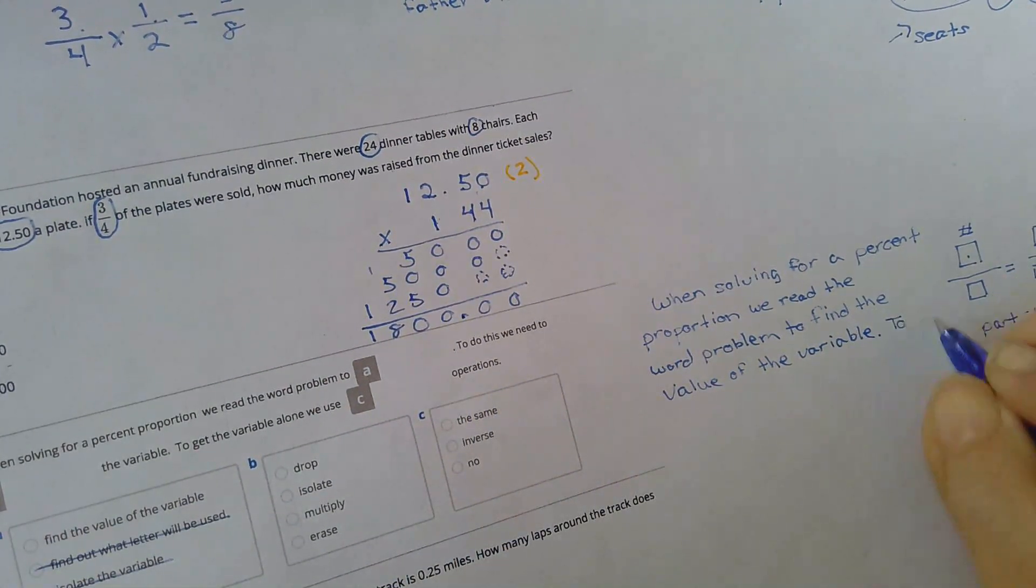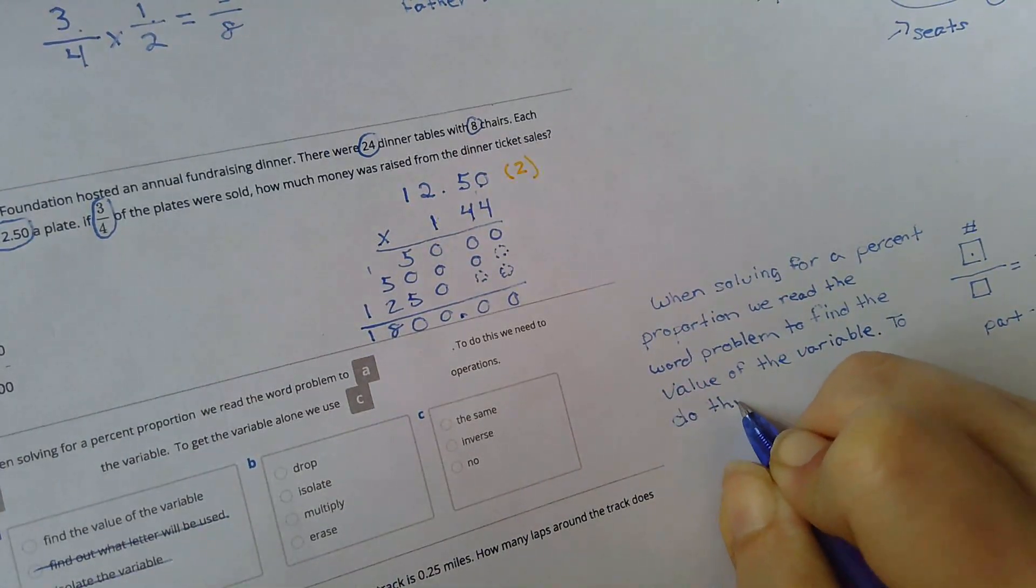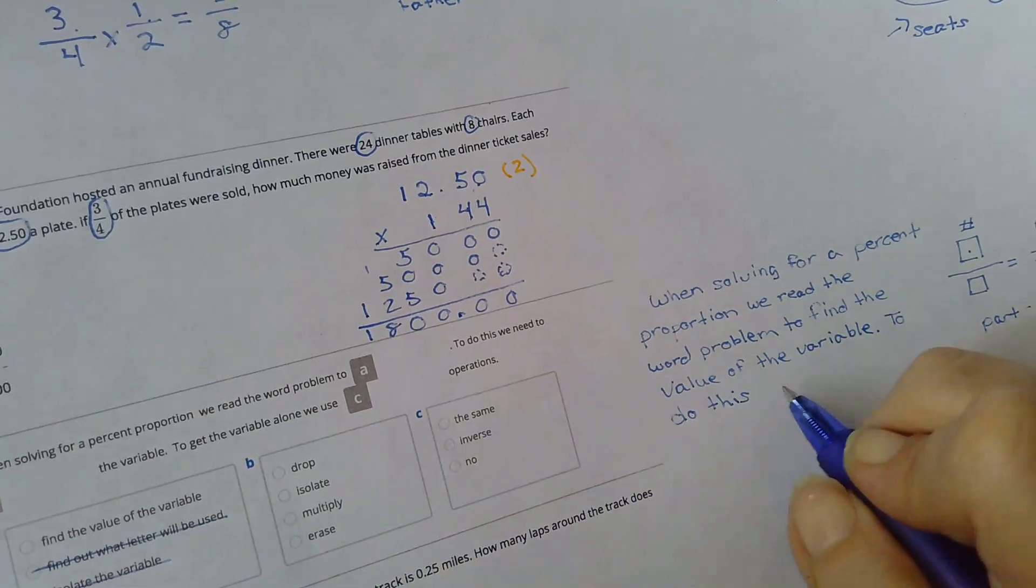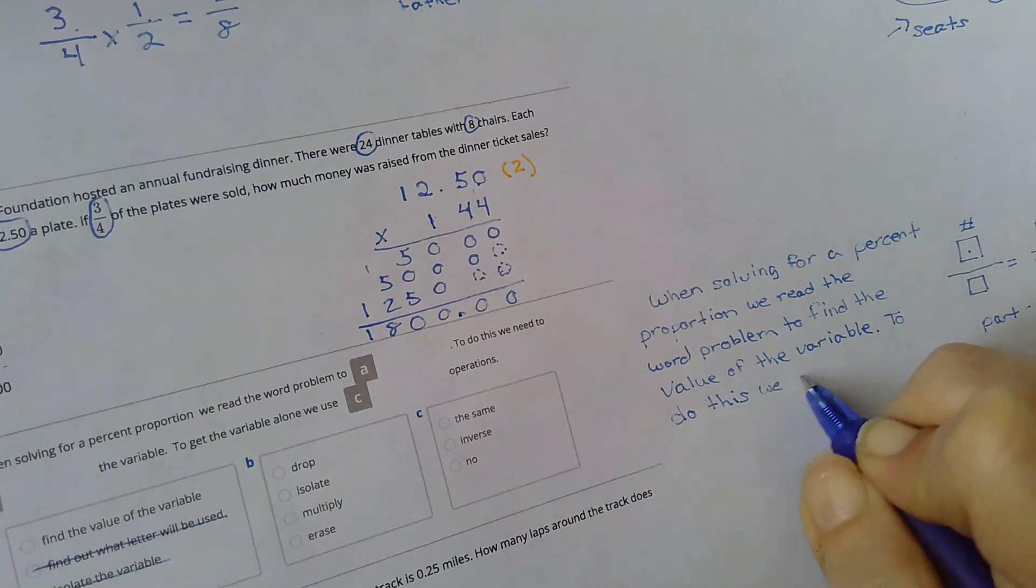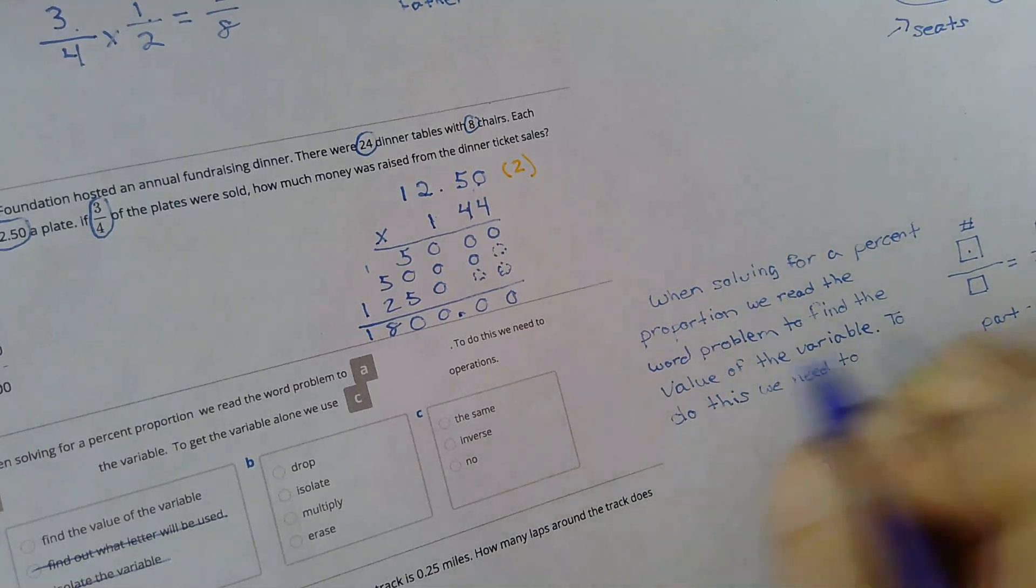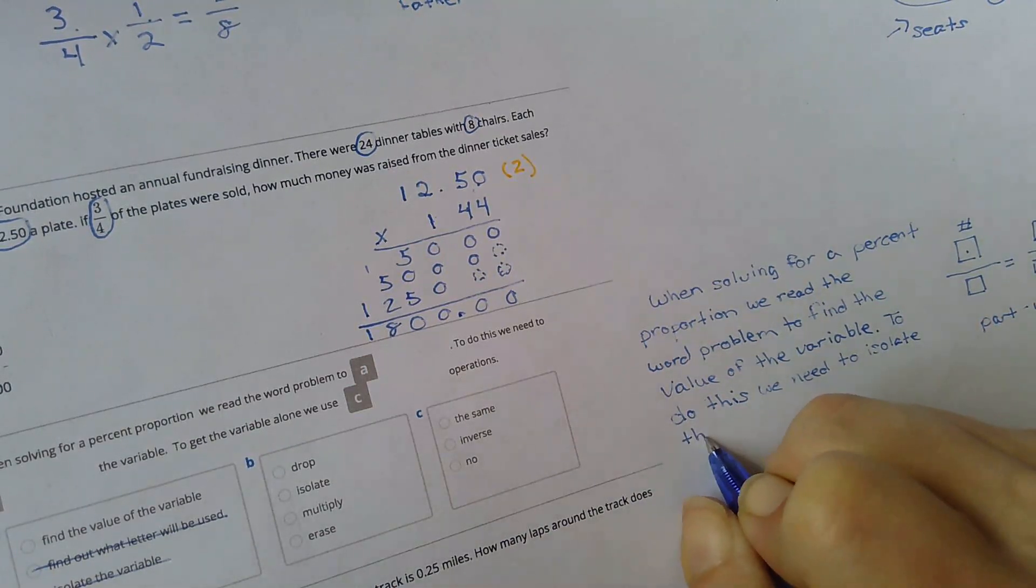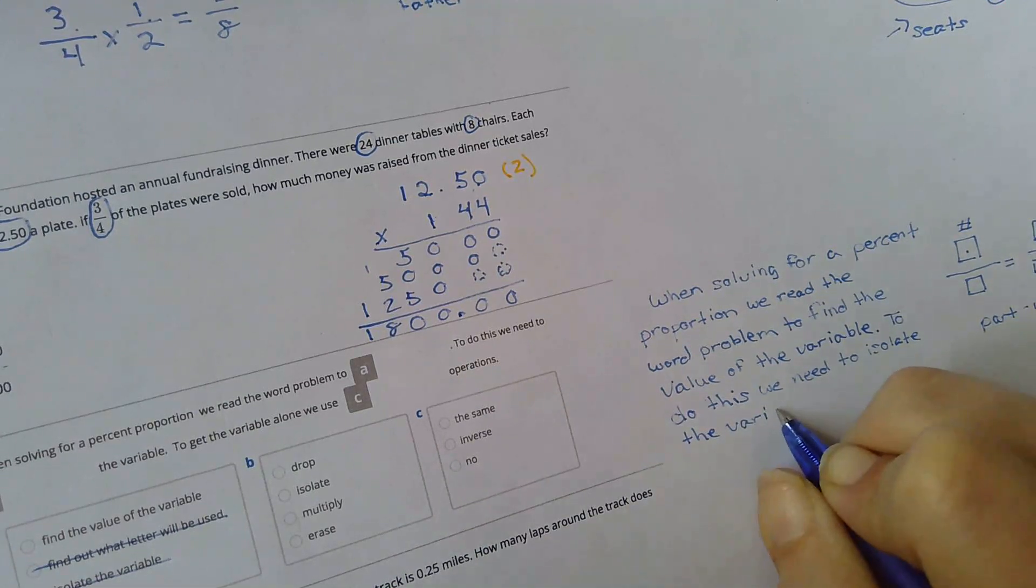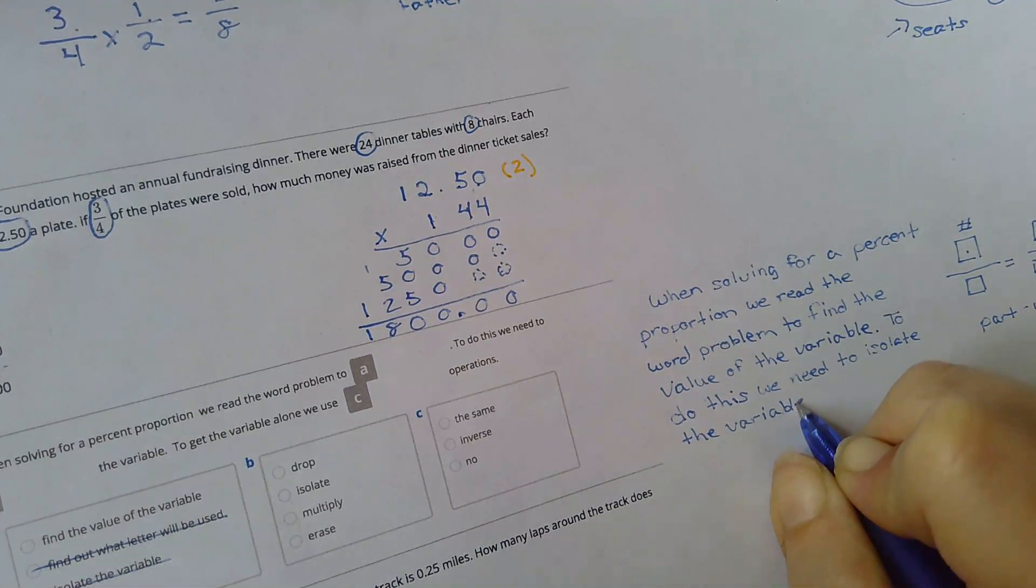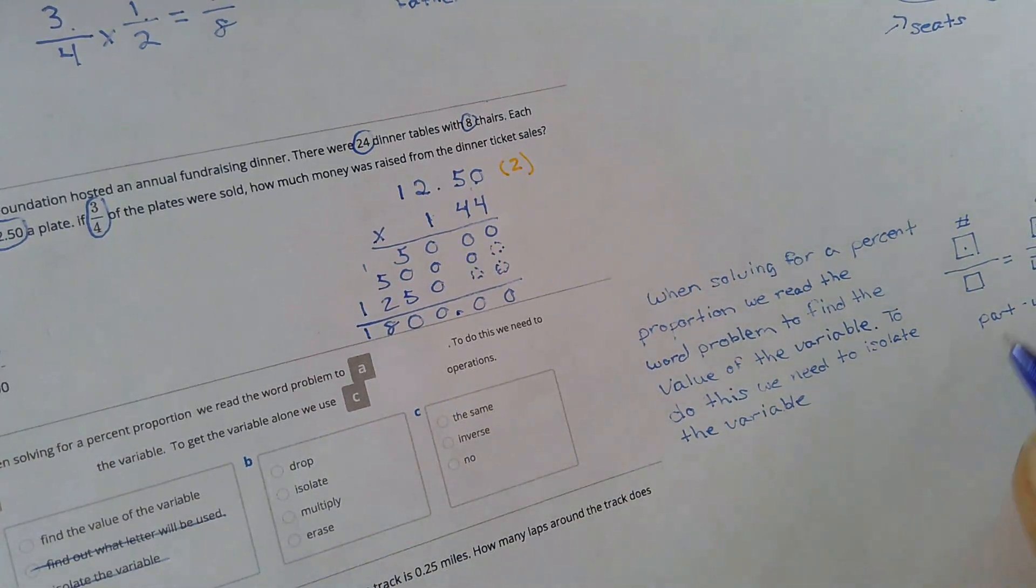And to do this, we need to isolate the variable. I don't need to drop the variable. I'm not multiplying it, not to get the value. I'm definitely not going to erase it.